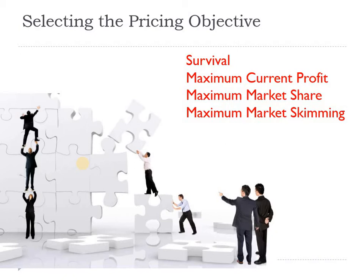We start with selecting the pricing objective. Pricing is done with an objective in mind. There is a marketing objective you are trying to achieve, and all the four Ps of marketing — product, price, place, and promotion — are all helping to achieve that overall marketing objective. You can also keep an objective for pricing. It actually has a larger role to play. Look at these four contexts in which we can think about what the potential objective is that you are trying to achieve by keeping a price in such a way.